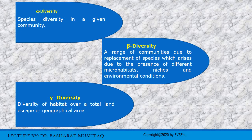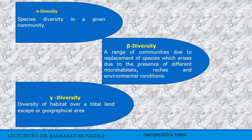Regarding these three hierarchical levels, Whittaker in 1965 said that community diversity is of three types: first, alpha diversity, which describes the species diversity in a given community depending upon species richness and evenness; second, beta diversity, which describes the range of communities due to replacement of species arising from different micro-habitats, niches, and environmental conditions; and third, gamma diversity, which describes the diversity of habitats over a total landscape or geographical area.